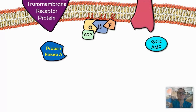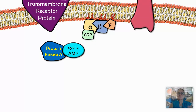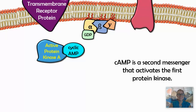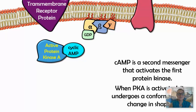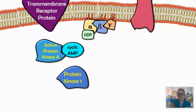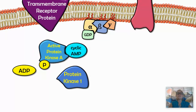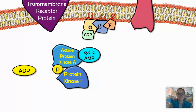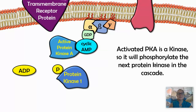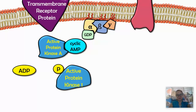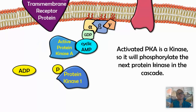Cyclic AMP activates protein kinase A. Protein kinase A then takes a phosphate from ATP — leaving ADP and inorganic phosphate — and phosphorylates the next protein kinase in the cascade. That protein kinase one becomes active and undergoes a conformational change. We call this a phosphorylation cascade — like a waterfall of phosphorylating proteins within the cell cytoplasm.